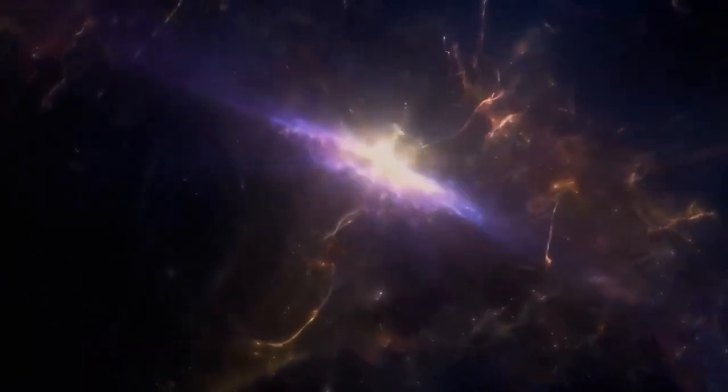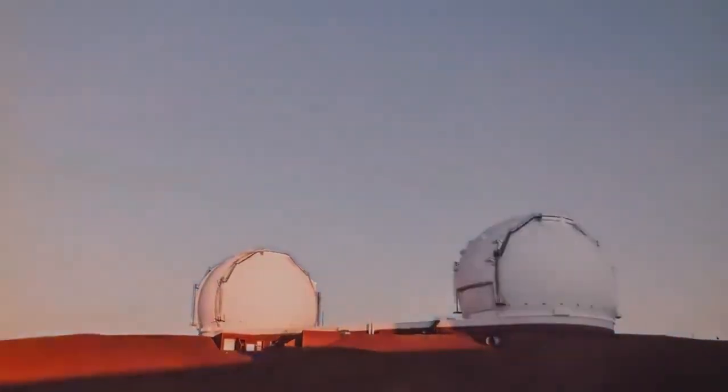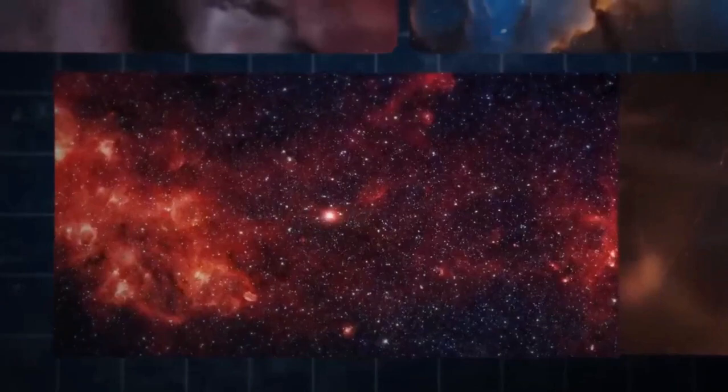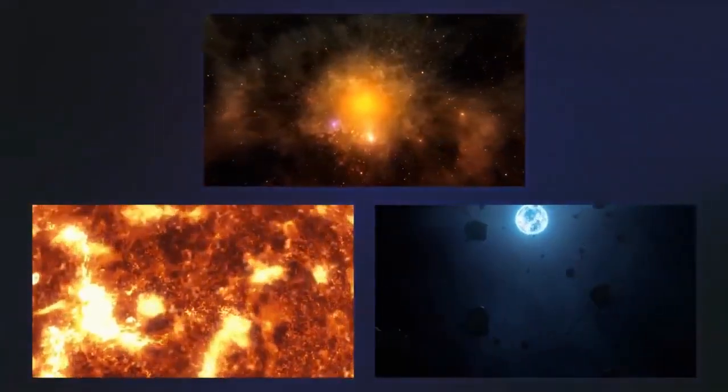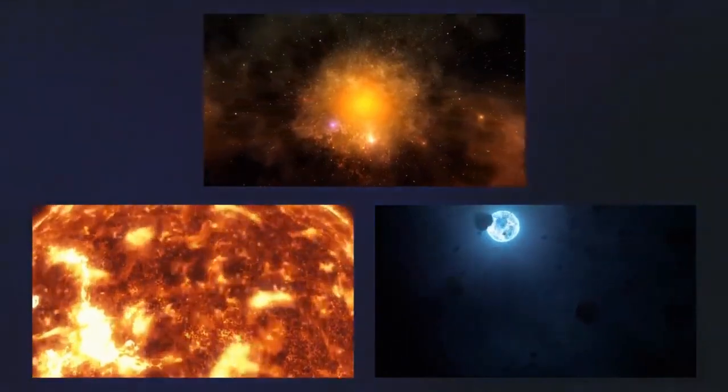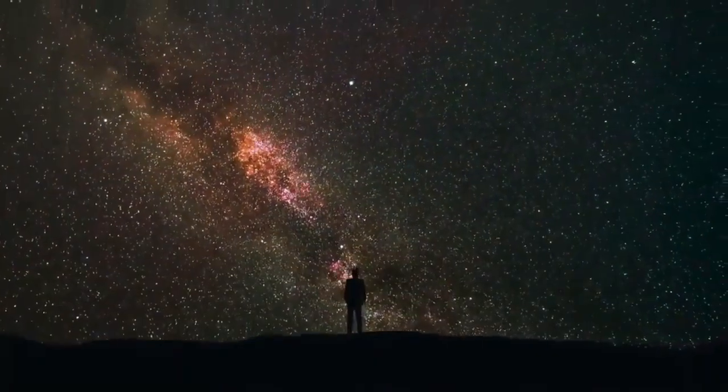Our solar system's Sun regularly ejects mass into space, which is known as solar flares. However, the Sun only exhales tiny fragments of its outer atmosphere, known as the corona, giving the phenomenon the name coronal mass ejection, CME.